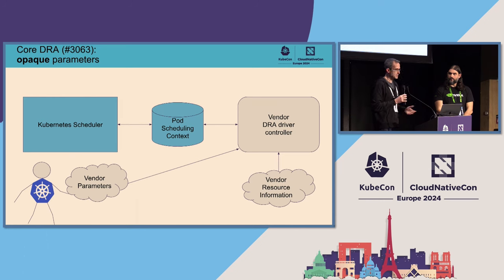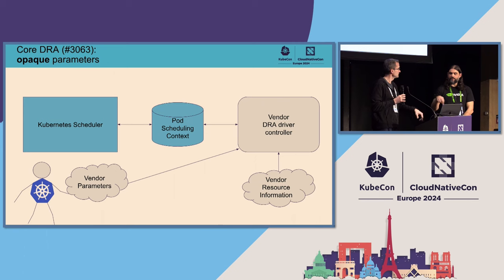The idea is that the Kubernetes scheduler lists some suitable nodes and stores that information in the pod scheduling context.